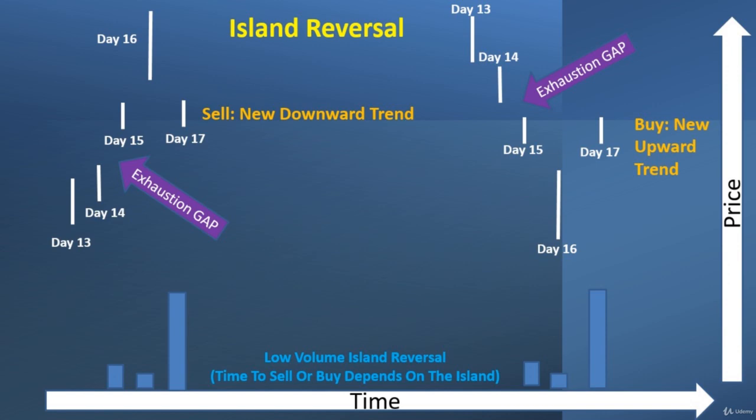That's the example of the left side — it's created a new downward trend on an island reversal. So it's time to sell, get out, and book the profits made from day one through 16, or however long we've stayed along. If we're in this security right now, we'd want to get out.